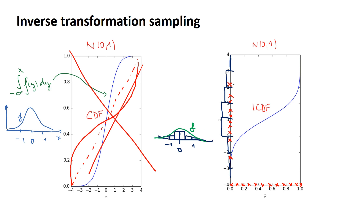So here we had uniformly distributed samples, we plugged each one into the ICDF, and what we obtained are normally distributed samples. If you look at this line — say between 0.1 and 0.9 — the majority of uniform input samples fall in this rectangle, and the corresponding output falls between roughly −1.5 and +1.5. Even though the input is uniform, most samples will fall in this central region, which is exactly how the normal distribution behaves. This is the intuition behind the ICDF.